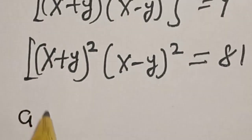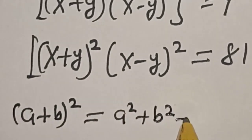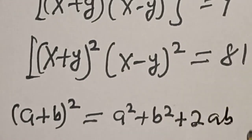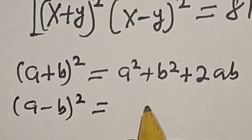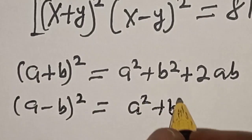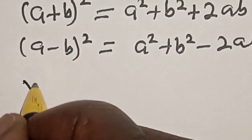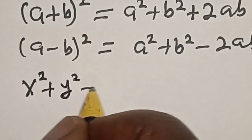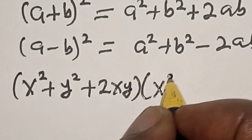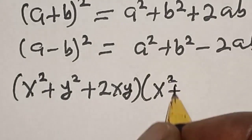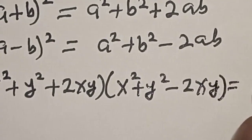Now remember this rule: if you have a plus b squared, this is equal to a squared plus b squared plus 2ab. And also if you have a minus b squared, this is equal to a squared plus b squared minus 2ab. Applying these expansions, we get x squared plus y squared plus 2xy multiplied by x squared plus y squared minus 2xy is equal to 81.